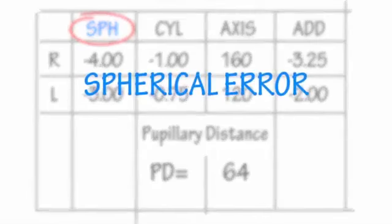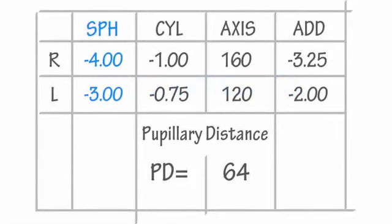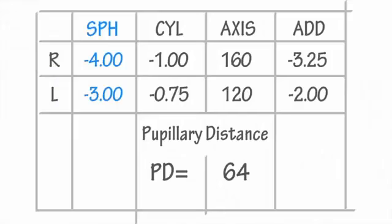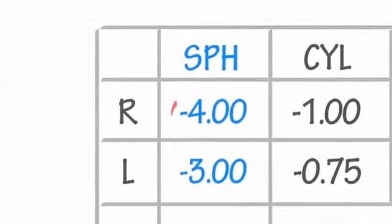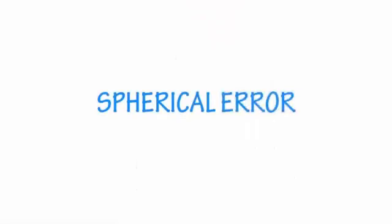Next we have SPH, which means spherical error. But don't be put off by the word error — all this simply means is how strong the lens needs to be to correct your vision. Below SPH you'll see a plus sign or a negative sign followed by a number. The plus sign means you're farsighted and the negative sign means you're nearsighted.